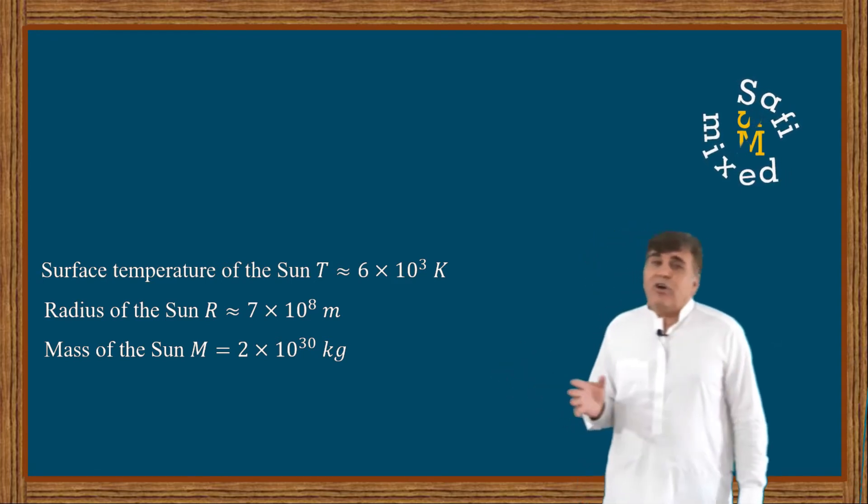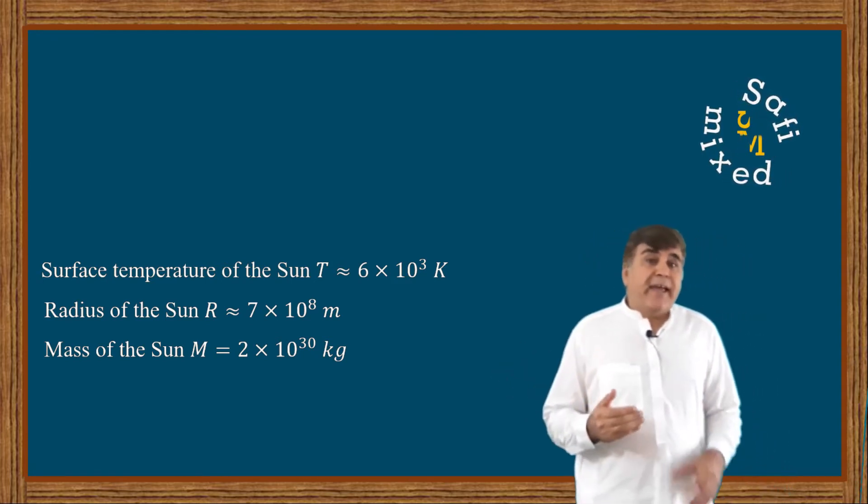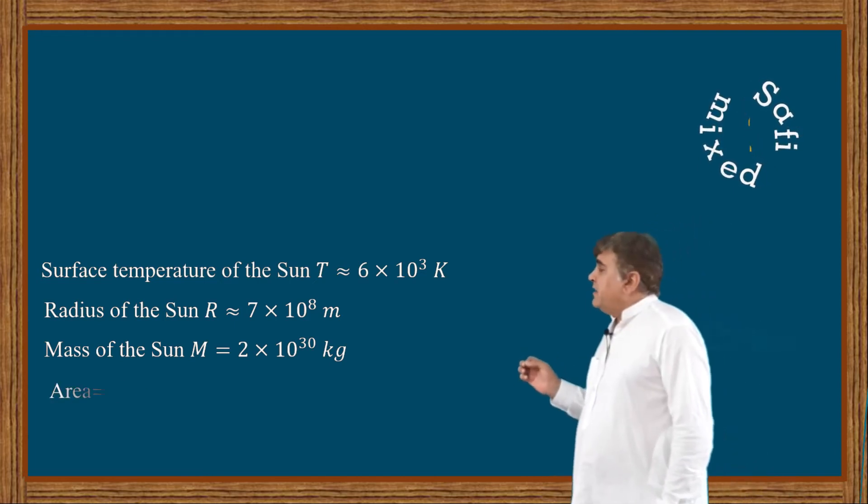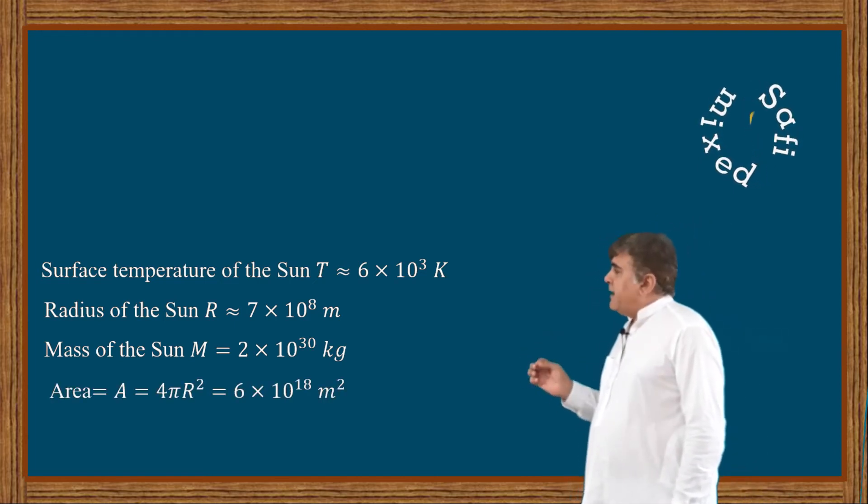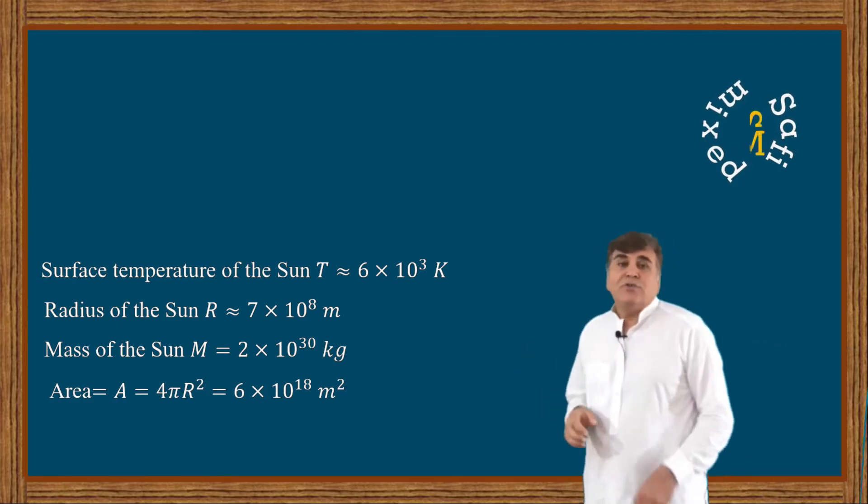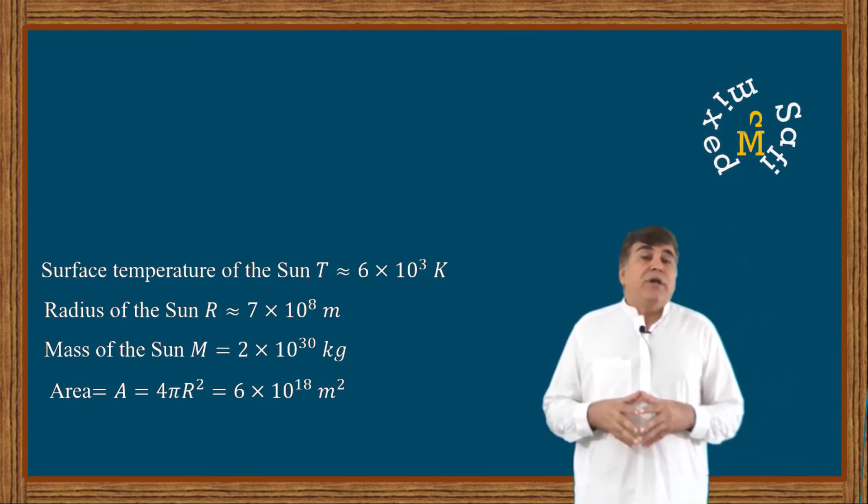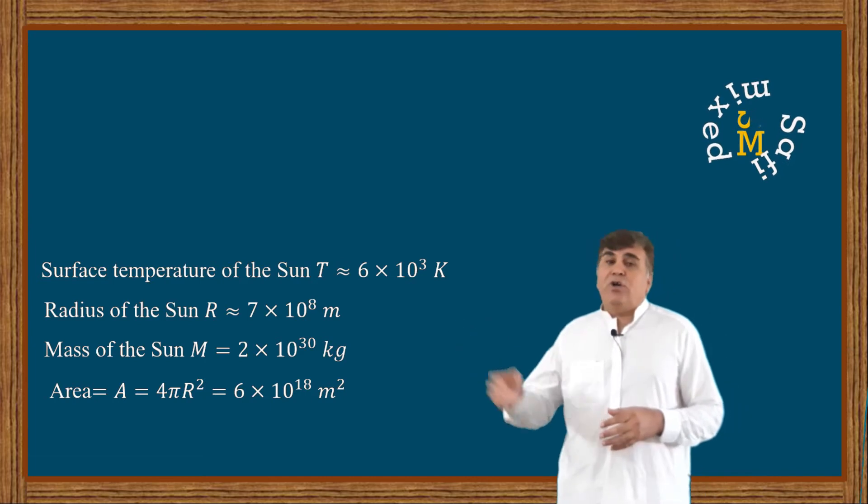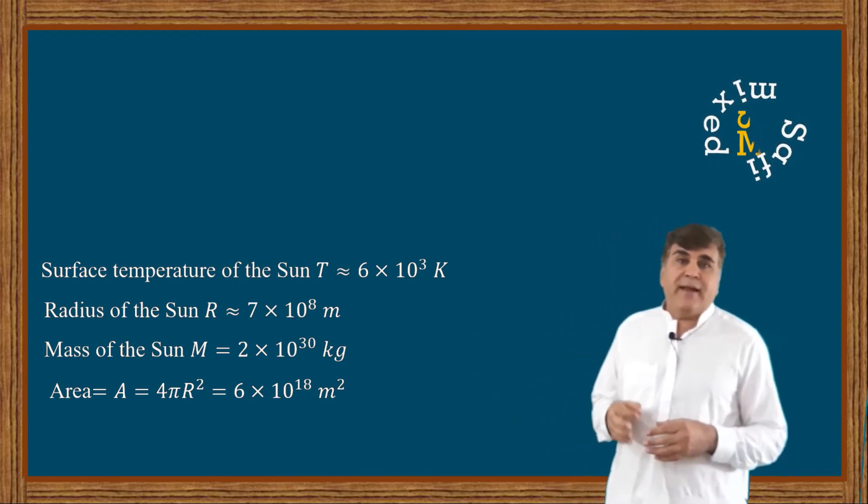With this data, considering Sun as a sphere, its area A equals 4πR², and substituting value from this data you can easily calculate that the area equals 6 × 10¹⁸ m².